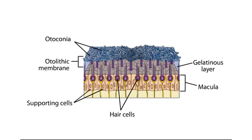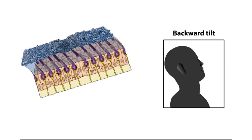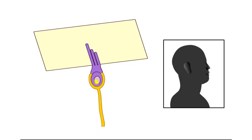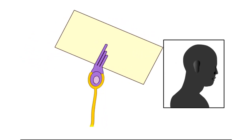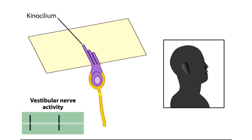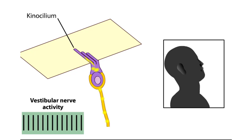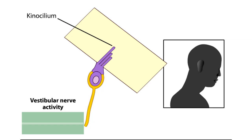The otoconia make the otolithic membrane considerably heavier than the structures and fluids surrounding it. Thus, when the head tilts, gravity causes the membrane to shift relative to the sensory epithelium. The resulting shearing motion between the otolithic membrane and the macula displaces the hair bundles, generating a receptor potential in the hair cells that is dependent upon the direction of tilt. Movement of the stereocilia toward the kinocilium causes potassium channels to open, depolarizing the hair cell, resulting in neurotransmitter release and excitation of the vestibular nerve fibers. Movement of the stereocilia away from the kinocilium closes the channels, hyperpolarizing the hair cell and thus reducing vestibular nerve activity.